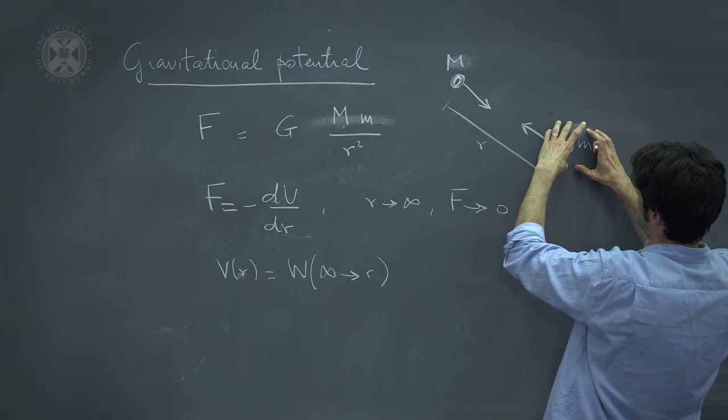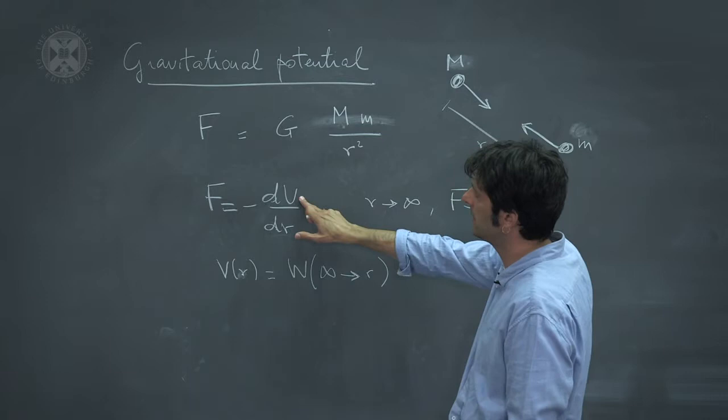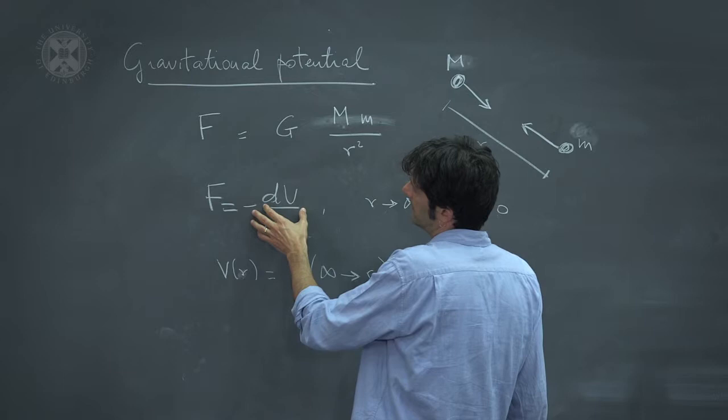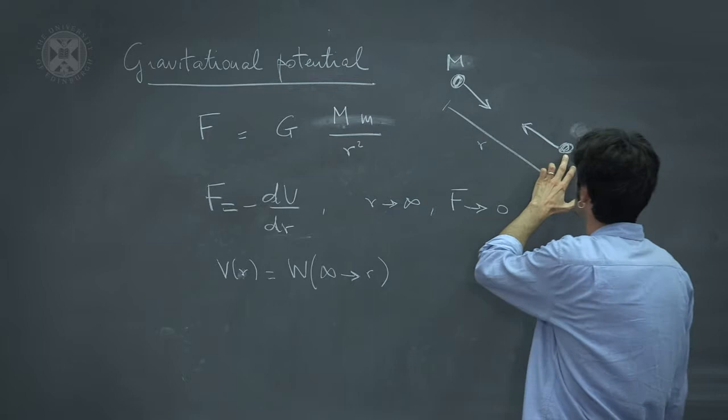we want to try to define a potential energy that describes how the mass capital M is attracting the mass little m. So we want to find a function V, which is the potential energy, such that minus the derivative of V with respect to the distance gives you the force acting on the particle, little m.